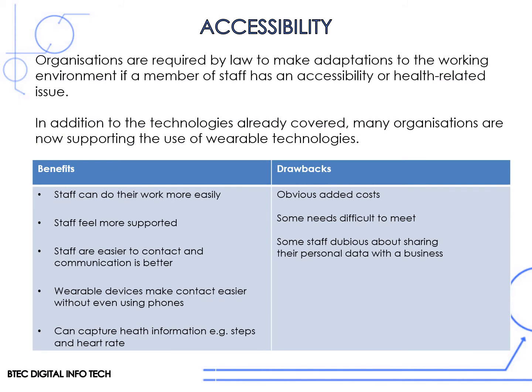With regards to accessibility, organizations are required by law to make certain adaptations. Many organizations are now supporting the use of wearable technologies like smart watches. The benefits are that staff can do their work more easily, staff are more likely to feel supported, they're easier to contact, communication has improved, and wearable devices make contact even easier without using phones. Wearable devices also allow us to capture health information such as the number of steps and heart rate. The drawbacks are the obvious added costs, some accessibility needs are difficult to meet, and some staff are dubious about sharing their personal data with a business.